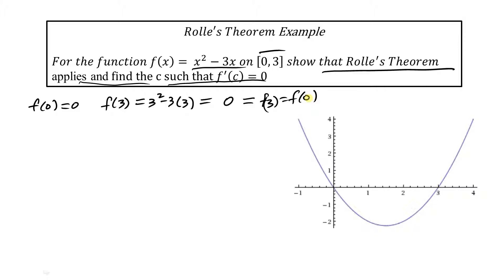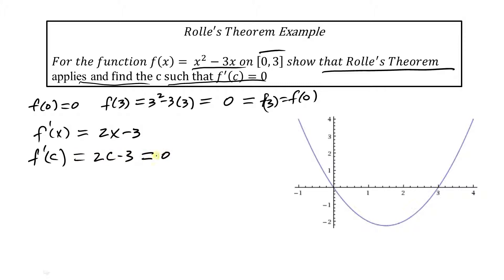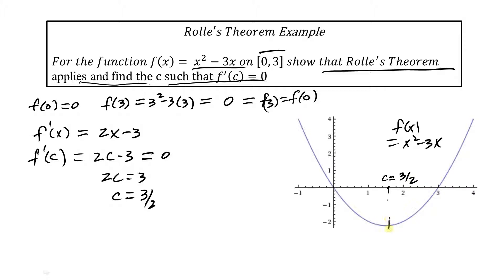This function is continuous and differentiable. So there must be a point where the first derivative, which in this case is 2x minus 3, equals zero. Therefore at some point c, we have 2c minus 3 equals zero, which gives 2c equals 3, and c equals three halves. You can see on the graph that for f(x) equals x squared minus 3x, at the point c equals three halves, the slope of the tangent line is zero.